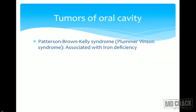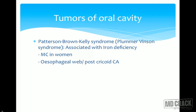Patterson-Brown-Kelly syndrome, also known as PV syndrome or Plummer-Vinson syndrome, is associated with iron deficiency and is seen almost exclusively in women. In this condition, esophageal webs and post-cricoid carcinoma are seen. It is a triad of iron deficiency anemia, post-cricoid carcinoma, and female predominance.